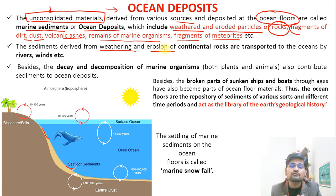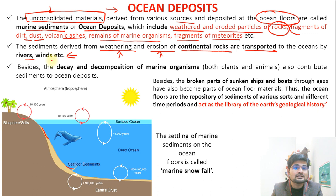If you have not watched the video on weathering and erosion, you can go to the geomorphology playlist and watch it there. The denudational process is common to continental rocks that are transported to the ocean by various agents — one of them is river, the other is wind. These are important agents responsible for the materials deposited in the ocean.